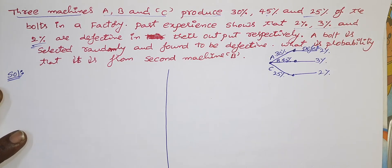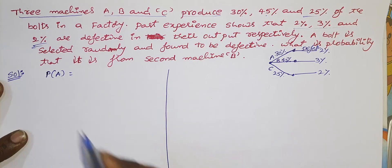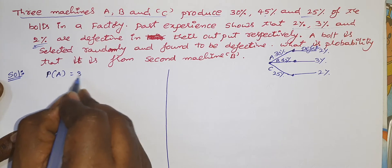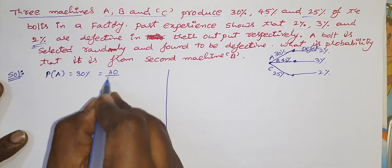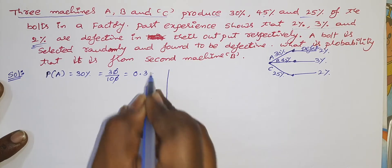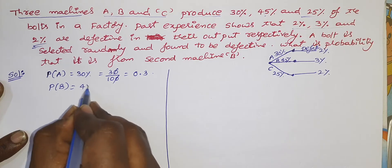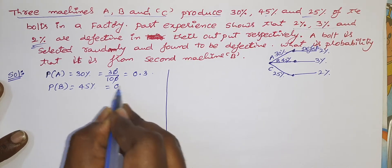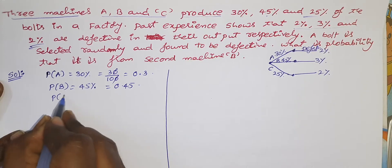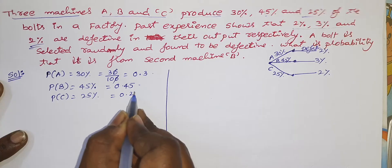According to the statement, probability of machine A — meaning a bolt is produced from machine A — is 30%, which is 30/100 = 0.3. Similarly, probability of B is 45%, which is 0.45. Probability of C is 25%, which is 0.25.